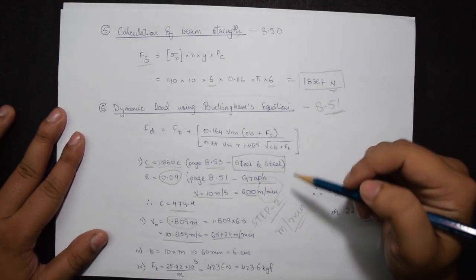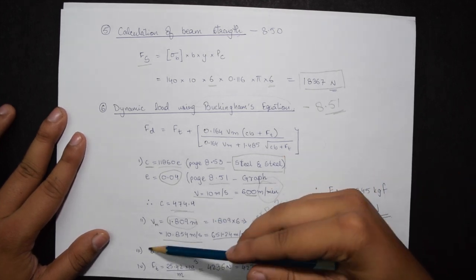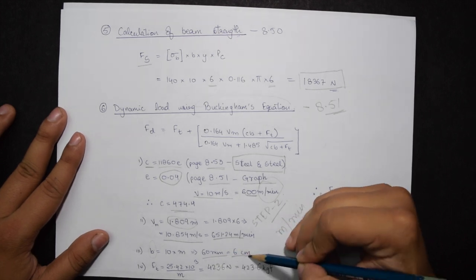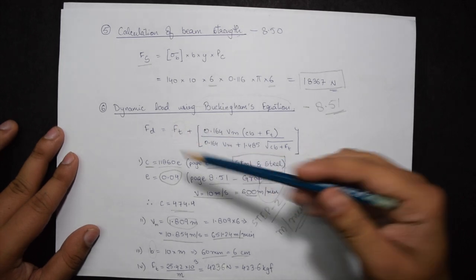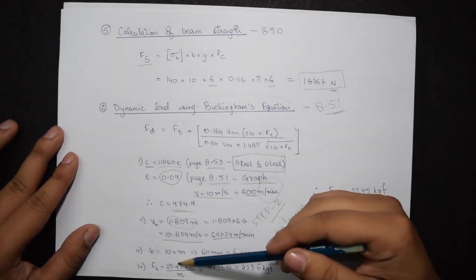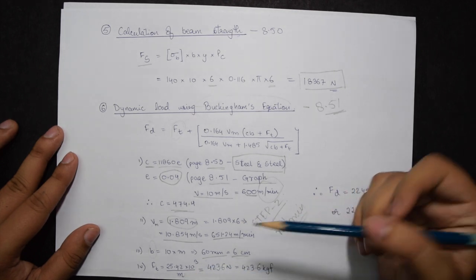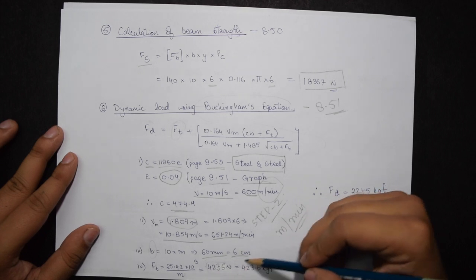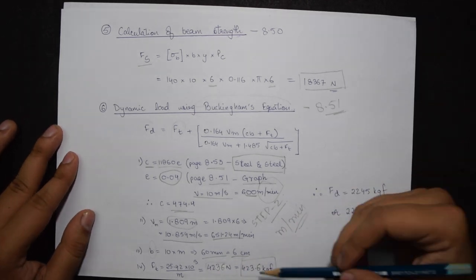Third one is B, that is face width, 10 times M which comes out to be 60 mm or 6 centimeters. The final value that we have to substitute is FT which comes out to be 25.4233 divided by M. M is 6 again, therefore my value becomes 4236 newtons or 423.6 kgf.